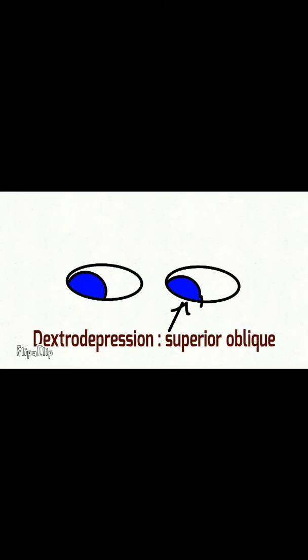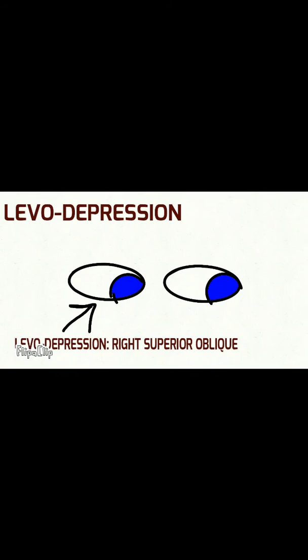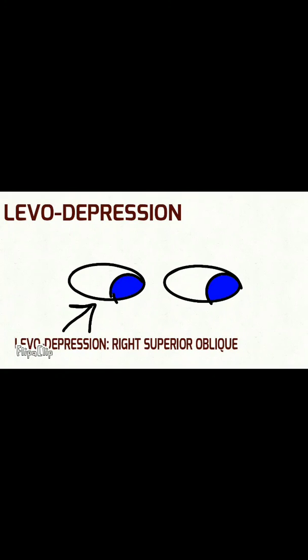Carefully observe this video. In dextroversion, the left eye's superior oblique will cause the eye to move downwards, meaning it causes depression in adduction. Whereas in levoversion, it is the right eye which is going into depression in adduction. Therefore the right eye's superior oblique will cause depression in adduction.